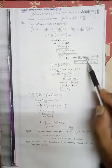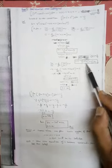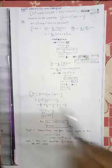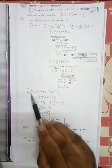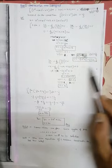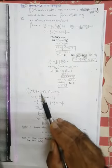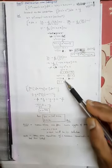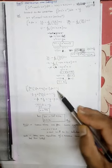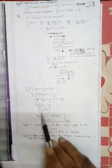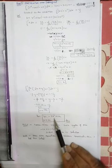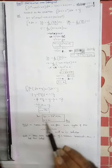Now substitute y and z into the additional condition to find λ. After computing y' = −(λ/2)x + 1 + λ/4 and z' = 1, substituting into the integral from 0 to 1 of (xy' + z')² dx = −1/3 and simplifying gives λ = 44. Substituting λ = 44 back: y = −11x² + 12x and z = x. This is the solution.